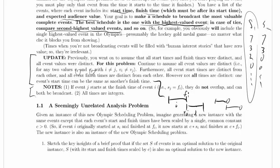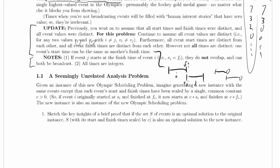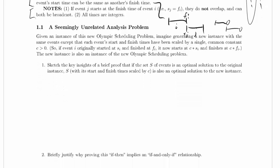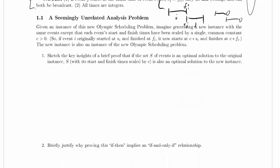Let's move on to the first problem. It says a seemingly unrelated analysis problem. Given an instance of this new Olympic scheduling problem, imagine generating a new instance with the same events, except that each event's start and finish times have been scaled by a single common constant C greater than 0.